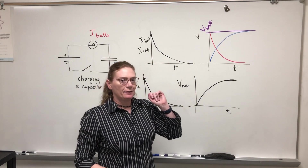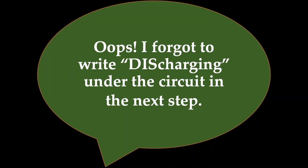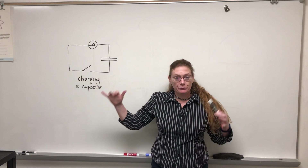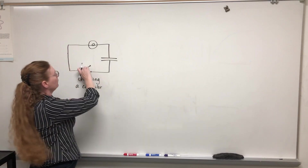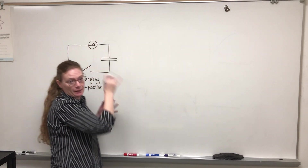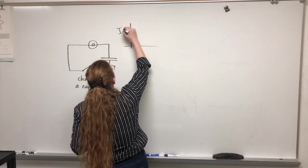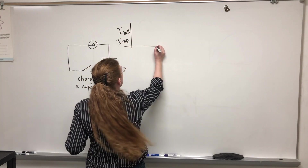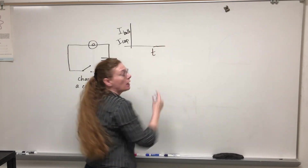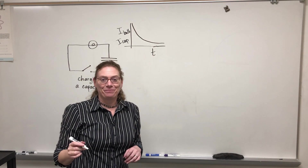This was for charging a capacitor. Now let's do discharging. We've charged up the capacitor, take the battery out, close the circuit back up, and when we close it the bulb lights up bright and goes dim. Since it's still a series circuit, the current through the bulb and the current through the capacitor have to be the same. Just like before, it starts out bright and goes dim — that same exponential decay going down.